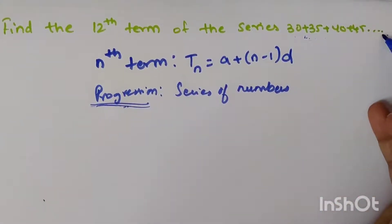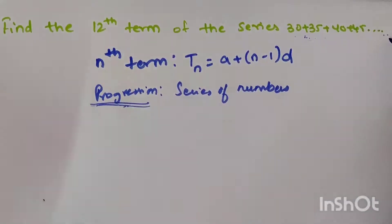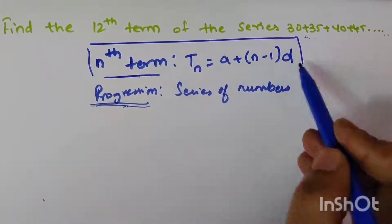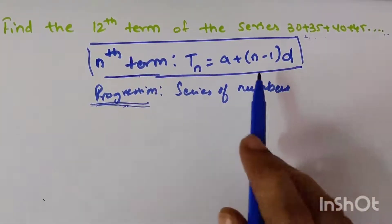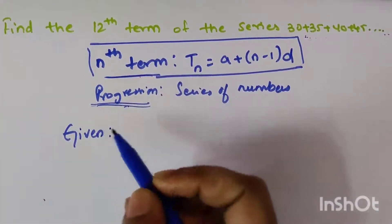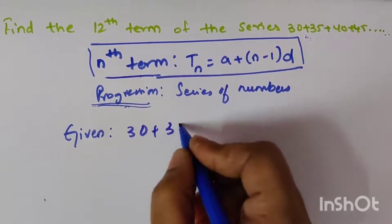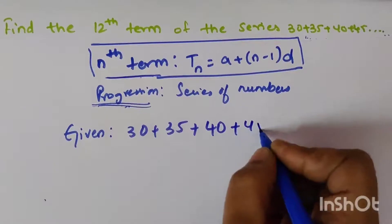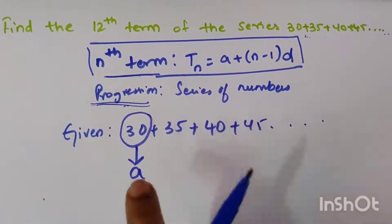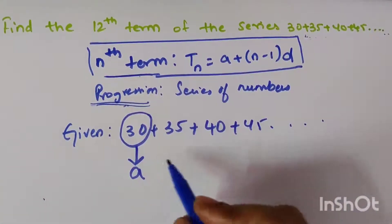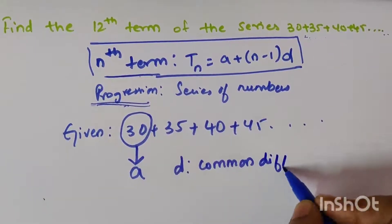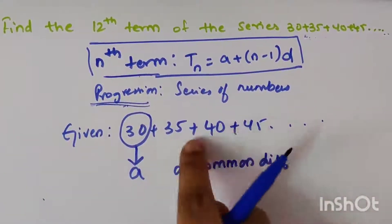We don't know how far this sequence can be written, so to find the nth term — the final term — the formula is T(n) = a + (n−1) × d. Now, given the series: 30 + 35 + 40 + 45 and so on, the first term is always called 'a', so a = 30. 'd' is the common difference — the present term minus the previous term.